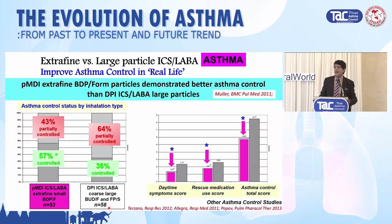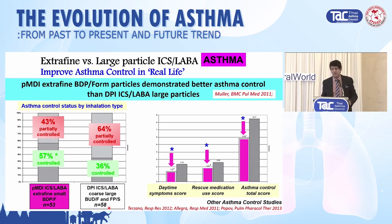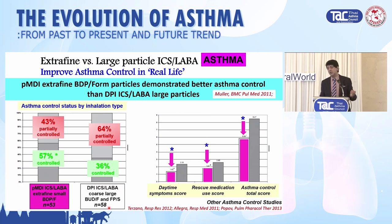Looking at asthma control in real life: with extra fine, 57% of patients were controlled compared to 36% with large particle. And extra fine reduced daytime scores, reduced rescue medication, and reduced asthma symptoms compared to large particles. This evidence shows extra fine small particles are more advantageous than current large particle therapy.